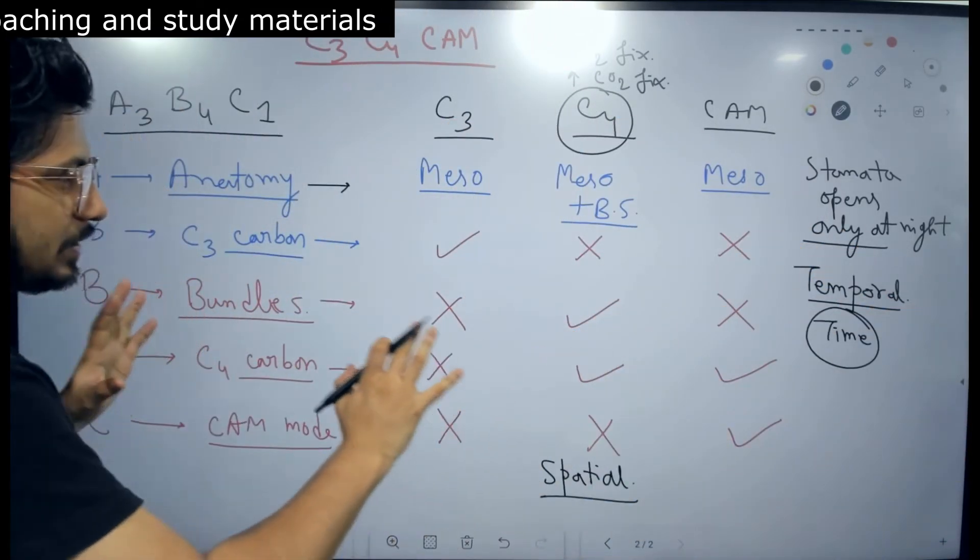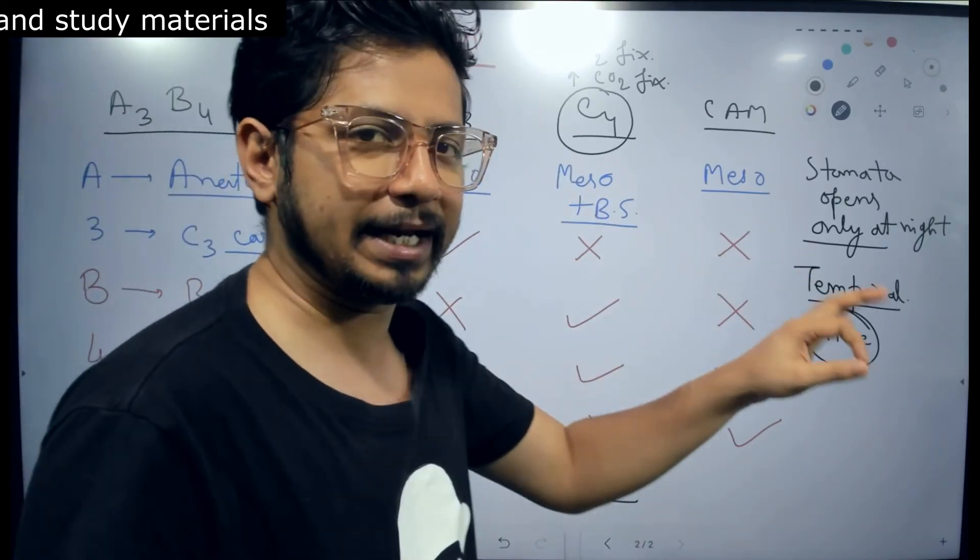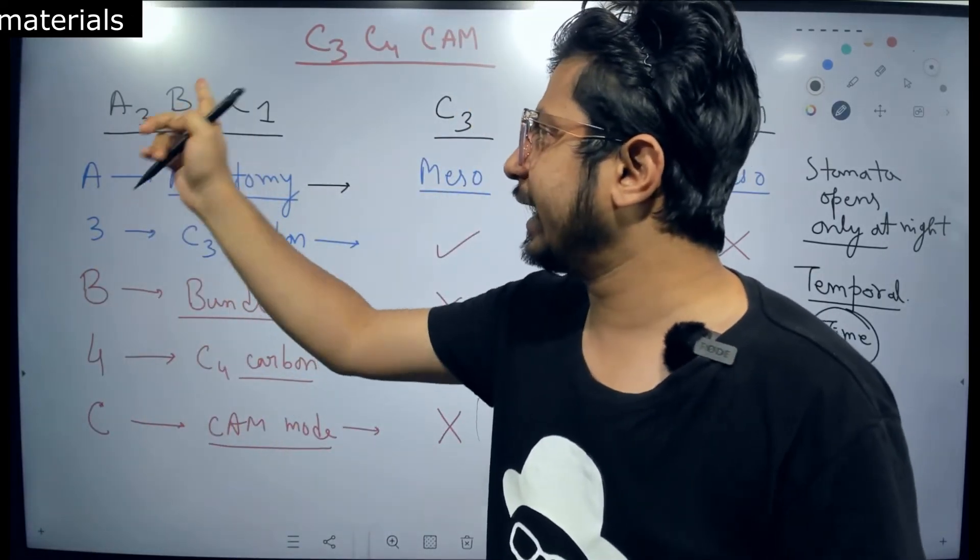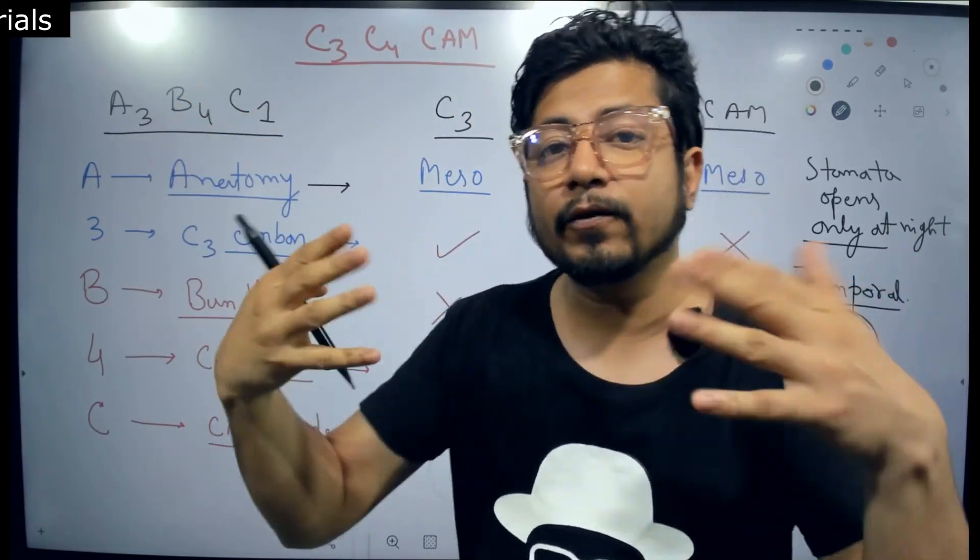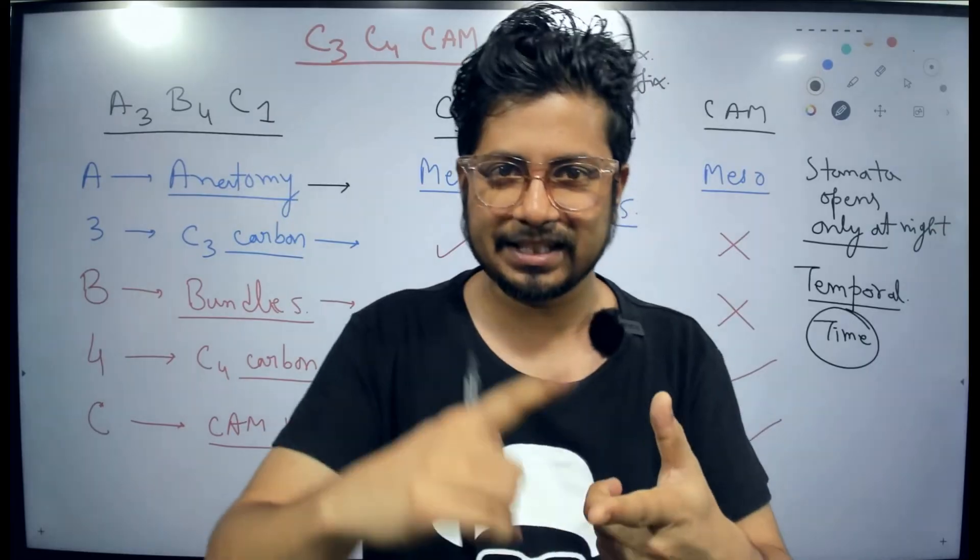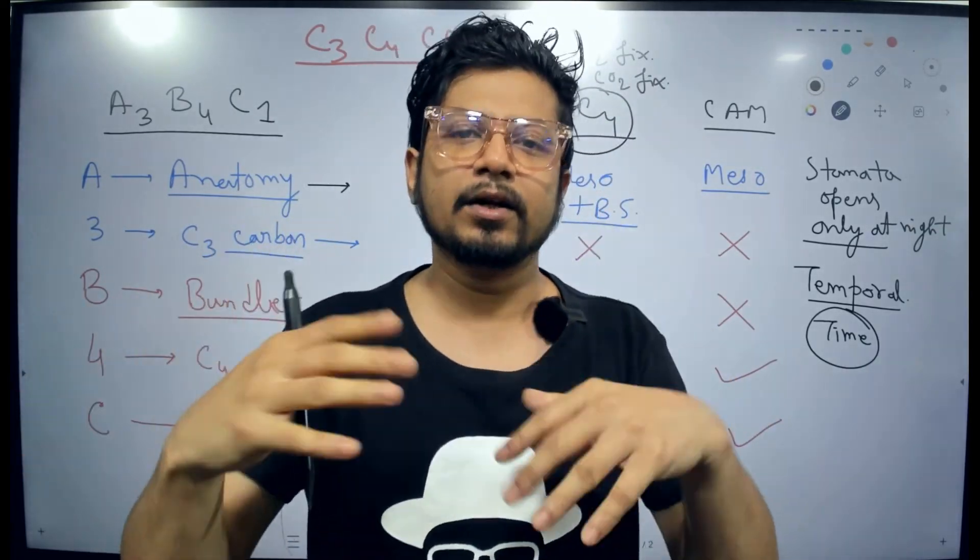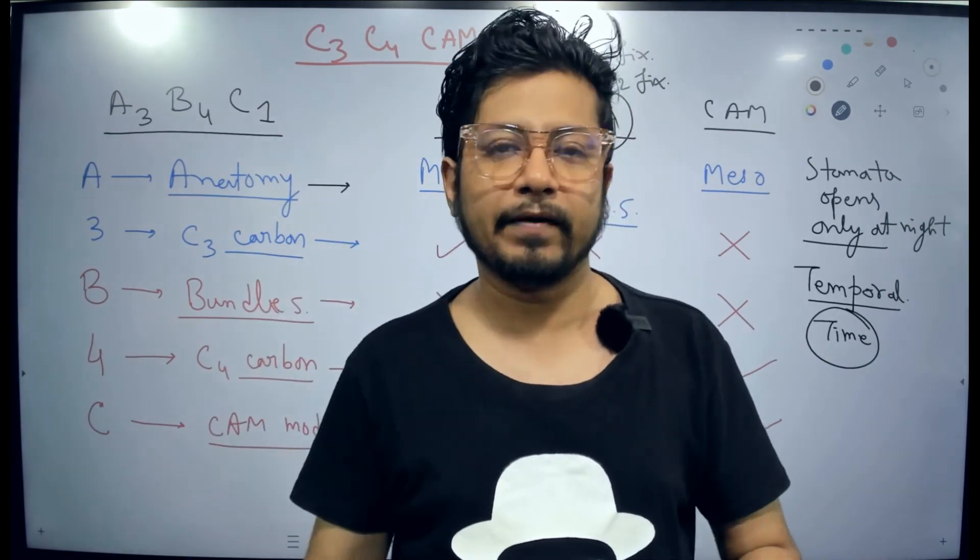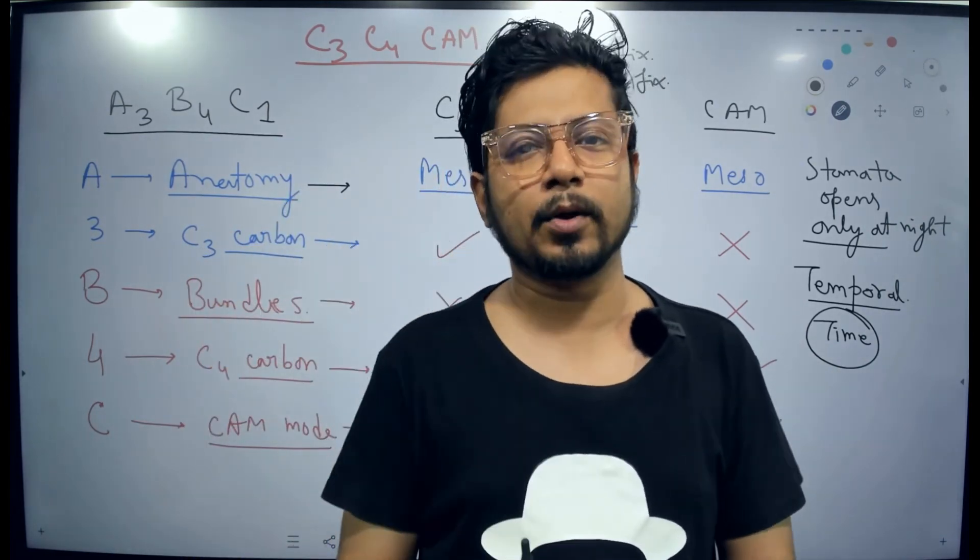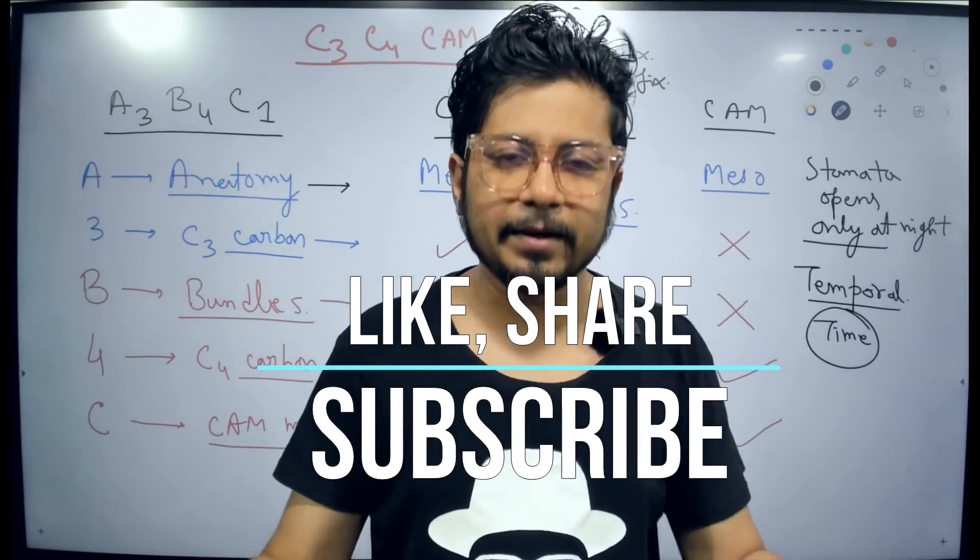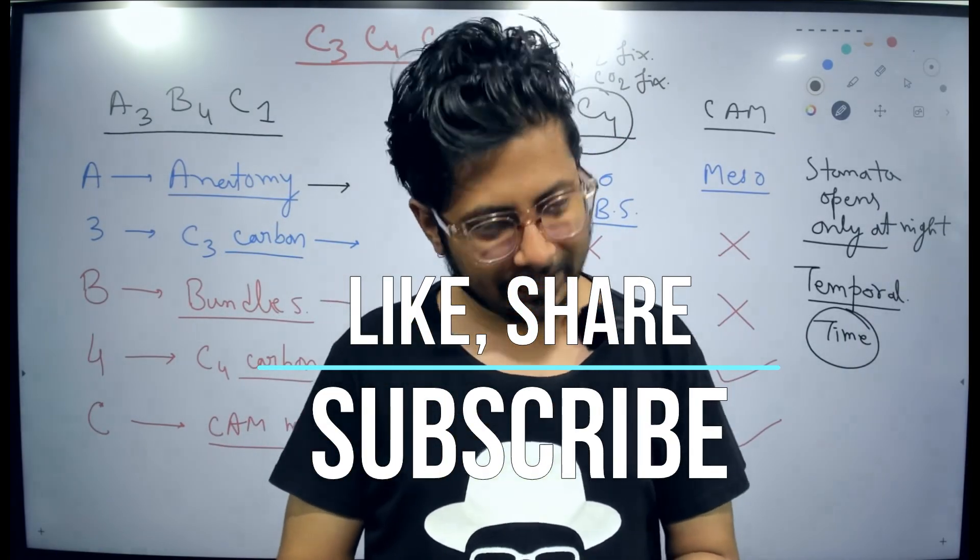In the daytime there is no such process of carbon dioxide fixation in CAM plants. So that is the difference between C3 plants, C4 plants and CAM plants. I have written the entire table based on this simple mnemonic A3B4C1. If you remember this, recall this A3B4C1, you will recall that for entire life and you will never forget. So that's the beauty about mnemonics. If you like this video please hit the like button, share this video to friends and subscribe to get more videos like that in future. Thank you. Bye.